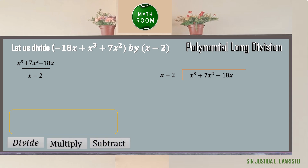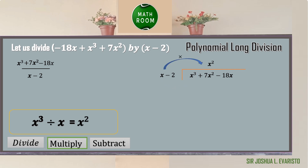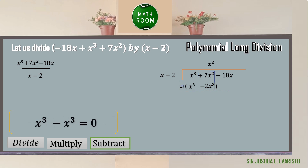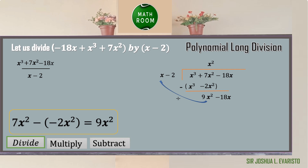We solve it using division, multiplication, and subtraction. Divide the first term of the dividend by the first term of the divisor: x cubed divided by x equals x squared. Multiply each term of the divisor by x squared: x times x squared equals x cubed, and negative 2 times x squared equals negative 2x squared. Subtract: x cubed minus x cubed equals 0, and 7x squared minus negative 2x squared equals 9x squared. Bring down negative 18x.